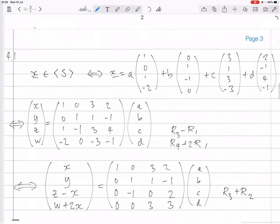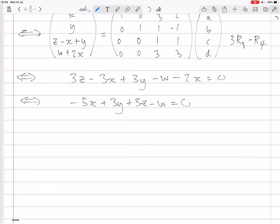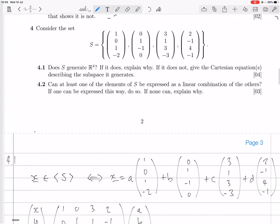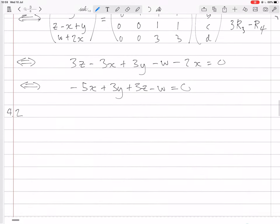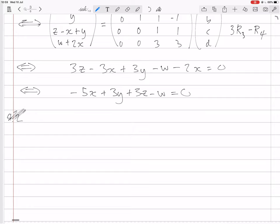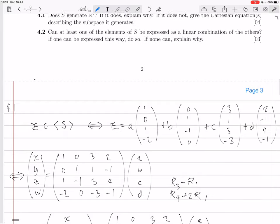So we're done. So 4.2, can at least one of the elements of S be expressed as a linear combination of the others? If one can be expressed this way, do so. If none can, explain why. Yes, of course they can be because we have four vectors, but they don't generate R4 because they only generate this Cartesian equation. By the way, this implies that the span of S is not equal to R4.